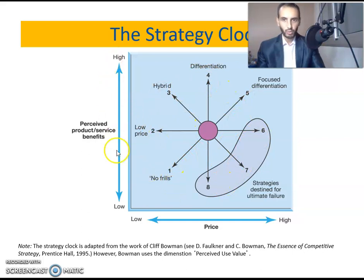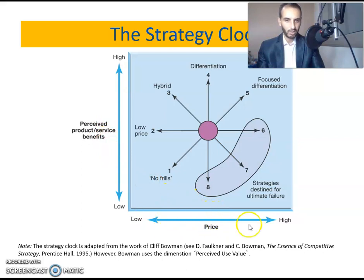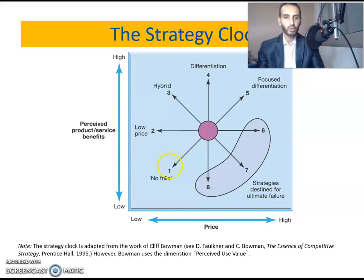Let's look at the strategy clock, which works clockwise from one to eight. On the y-axis we have perceived value and customer perception of service benefits; on the x-axis we have price, either low or high. Starting at position one — 'no frills' — airlines for example provide only the core product, which consists of selling a ticket for traveling, without any additional services beyond the main service of traveling: no breakfast, no comfortable seats, no luggage, etc.